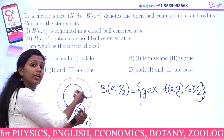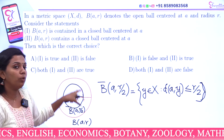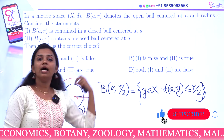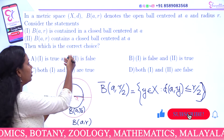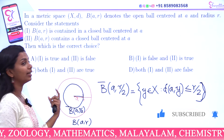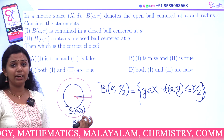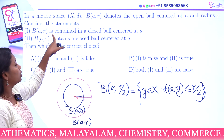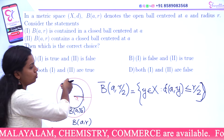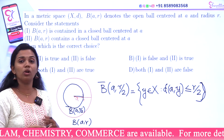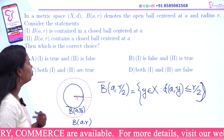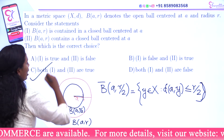We need the open ball to contain this closed ball centered at a. If d(a, y) ≤ r/2, then since r/2 < r, d(a, y) is strictly less than r. So the closed ball B̄(a, r/2) is contained in the open ball B(a, r). Since distance is a positive number, both statement 1 and statement 2 are true. That is the answer.